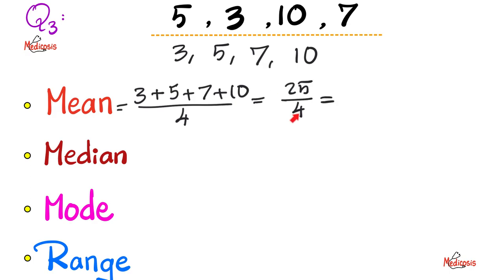25 divided by 4. Well, I know that 24 divided by 4 is 6. So, there is a remainder of 1 divided by 4 is a quarter. So, it is 6 and a quarter.